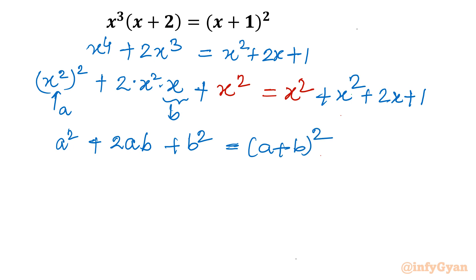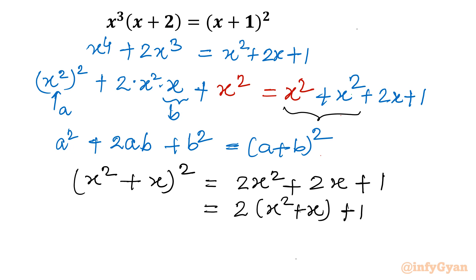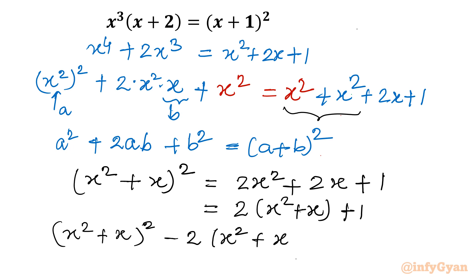Now let's write the LHS. LHS will become (x² + x) whole square. And the RHS would be x² plus x² — that is 2x² — plus 2x plus 1. I will take 2 common, so it gives us x² plus x plus 1. Taking all terms to the left, the equation becomes (x² + x)² minus 2(x² + x) minus 1 equal to 0.